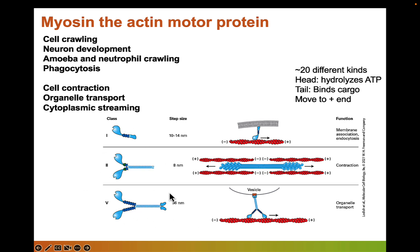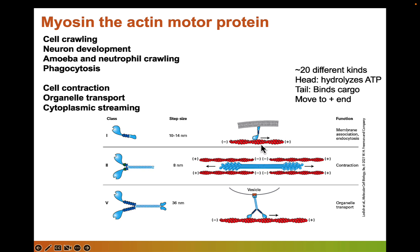There are around twenty different kinds of myosin proteins. They all play a really important role in processes like cell contraction, organelle transport, and cytoplasmic streaming — which you may have seen when looking at chloroplasts moving in Elodea plants in lab. Myosin moves along actin filaments but can only move towards the plus end, which is another reason why identifying the plus end is important.